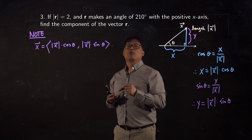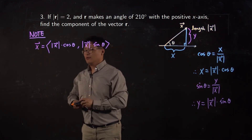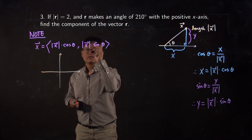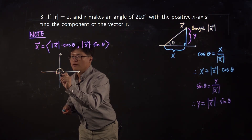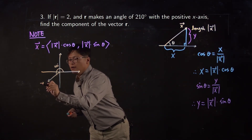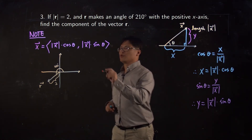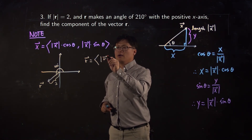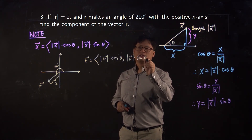Let me apply this to problem number 3. The length of the vector is 2 and the angle is 210°. Let me give you a figure. Since the angle is 210°, which is 180° plus 30° more, your vector r is here — this is 210 degrees, and we know the length of this vector is 2. So your vector r equals (length of r · cosine θ, length of r · sine θ).